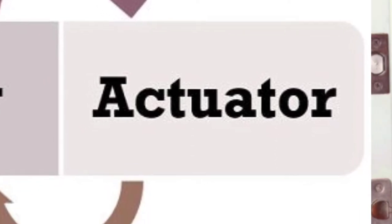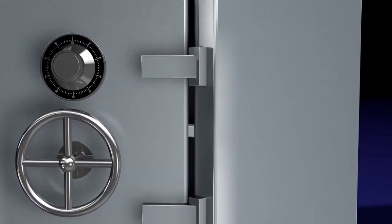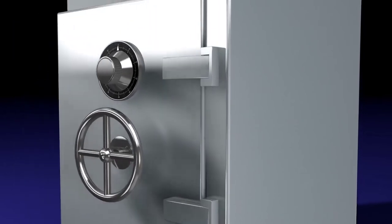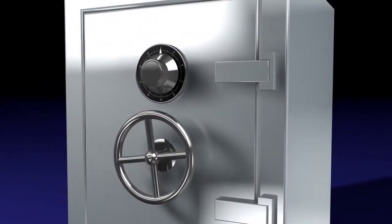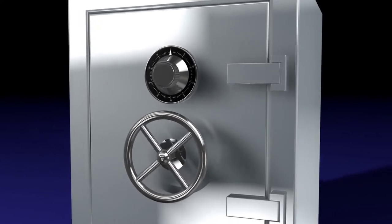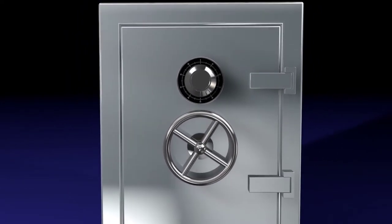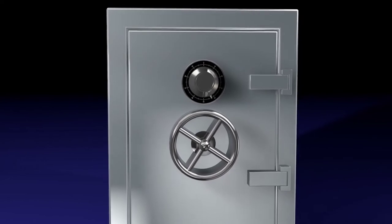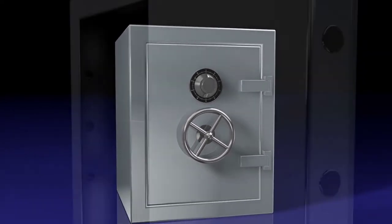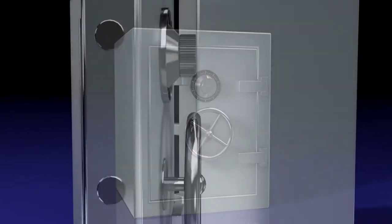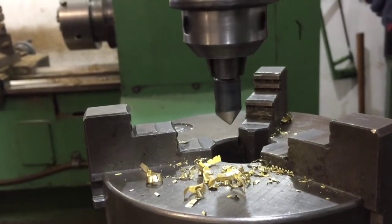An actuator is a part of a device or machine that helps it to achieve physical movement by converting one form of energy into mechanical force. The energy might be electrical, air, or hydraulic that is converted into mechanical force. In simple words, it is the component in any machine that enables movement.